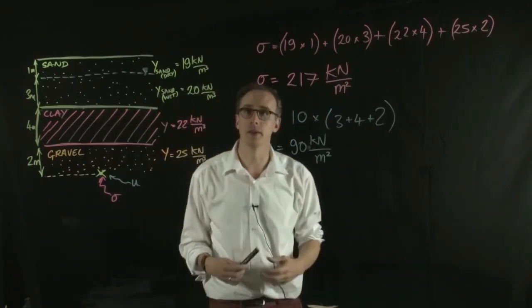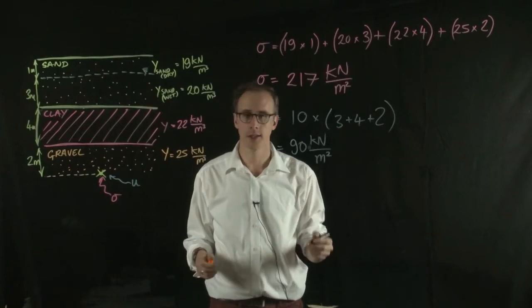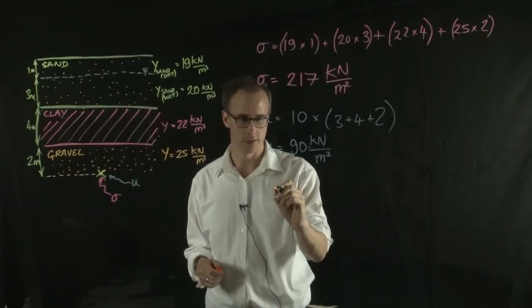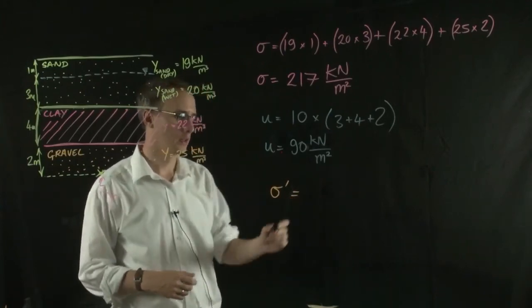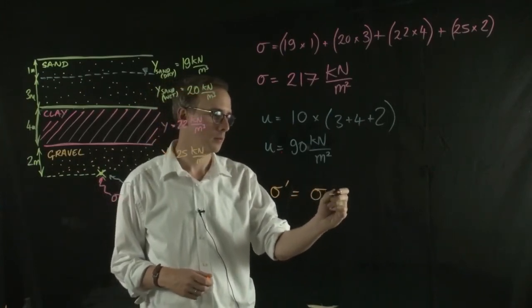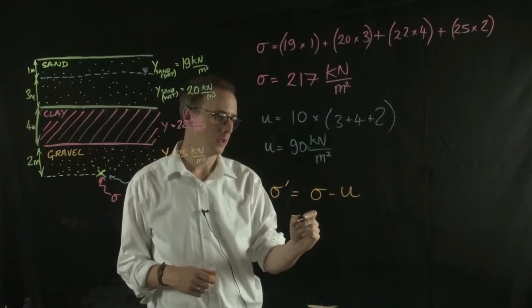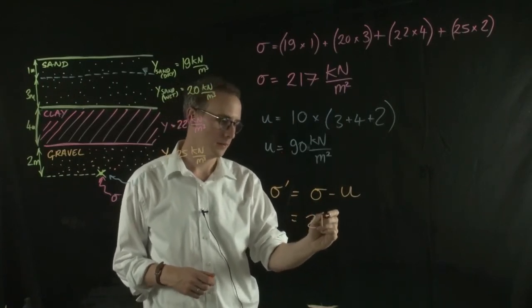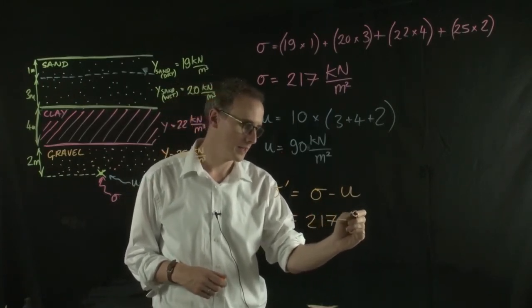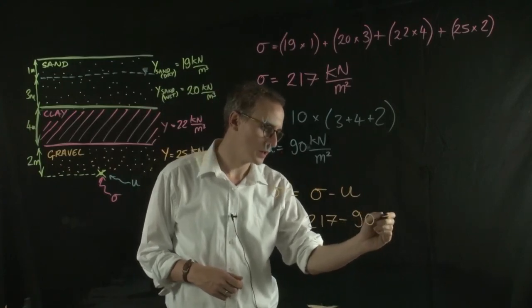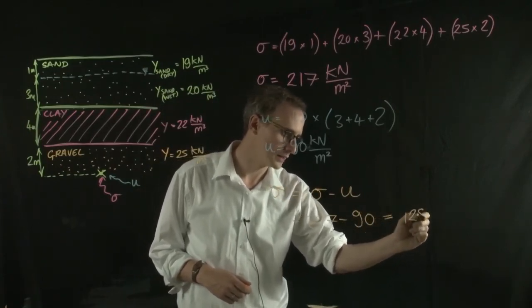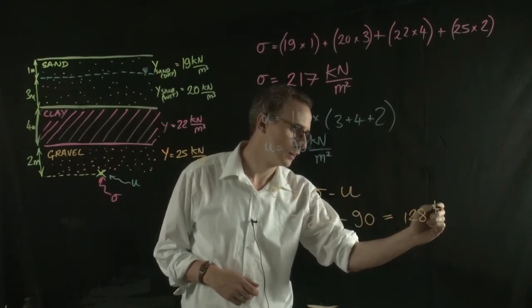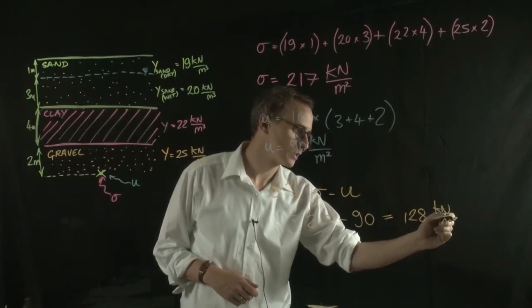Okay. So the last thing we need to work out is the effective stress. So the effective stress is equal to the total stress minus the pore water pressure which equals 217 minus 90 which equals 128 kilonewtons per meter squared.